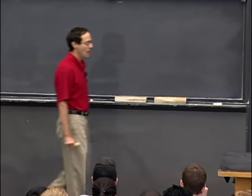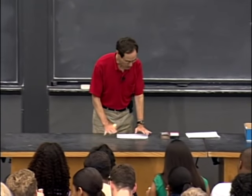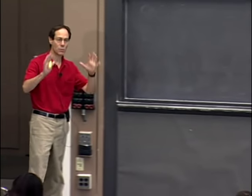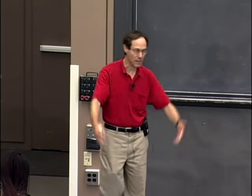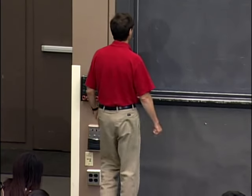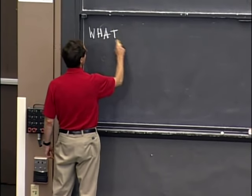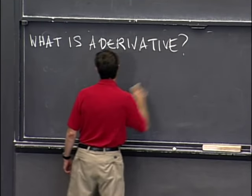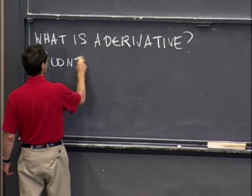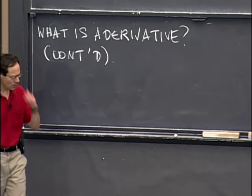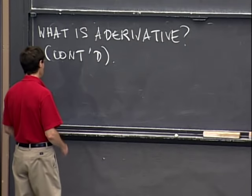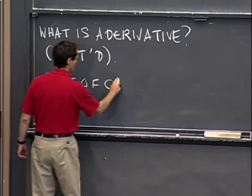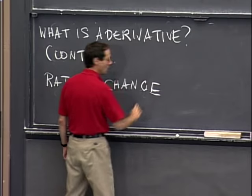Today I want to finish up with other points of view on what a derivative is. This is extremely important — almost the most important thing I'll be saying in the class. We talked about geometric interpretations last time, and today we're going to talk about rate of change as an interpretation of the derivative.